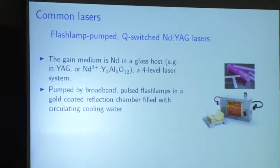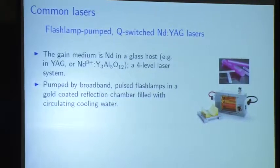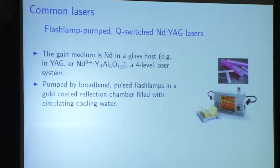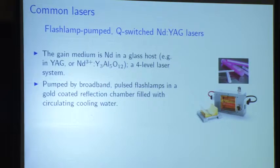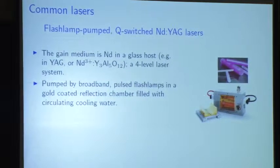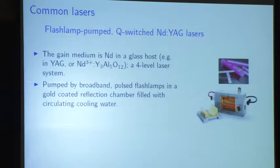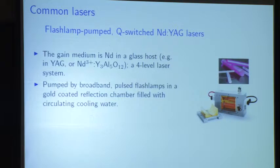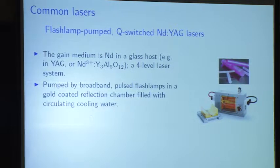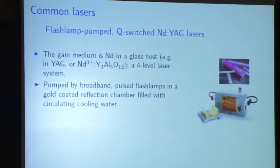The YAG rods sit inside here and are pumped by flash lamps. The flash lamps go inside a tube with a gold-coated reflector cavity. The lamp flashes, and there's cooling water flowing through — it has to be deionized cooling water because of the high voltage across the lamps. The cooling water keeps everything cool. The lamp uniformly blasts the YAG rod, and that's where we get gain in this particular case.